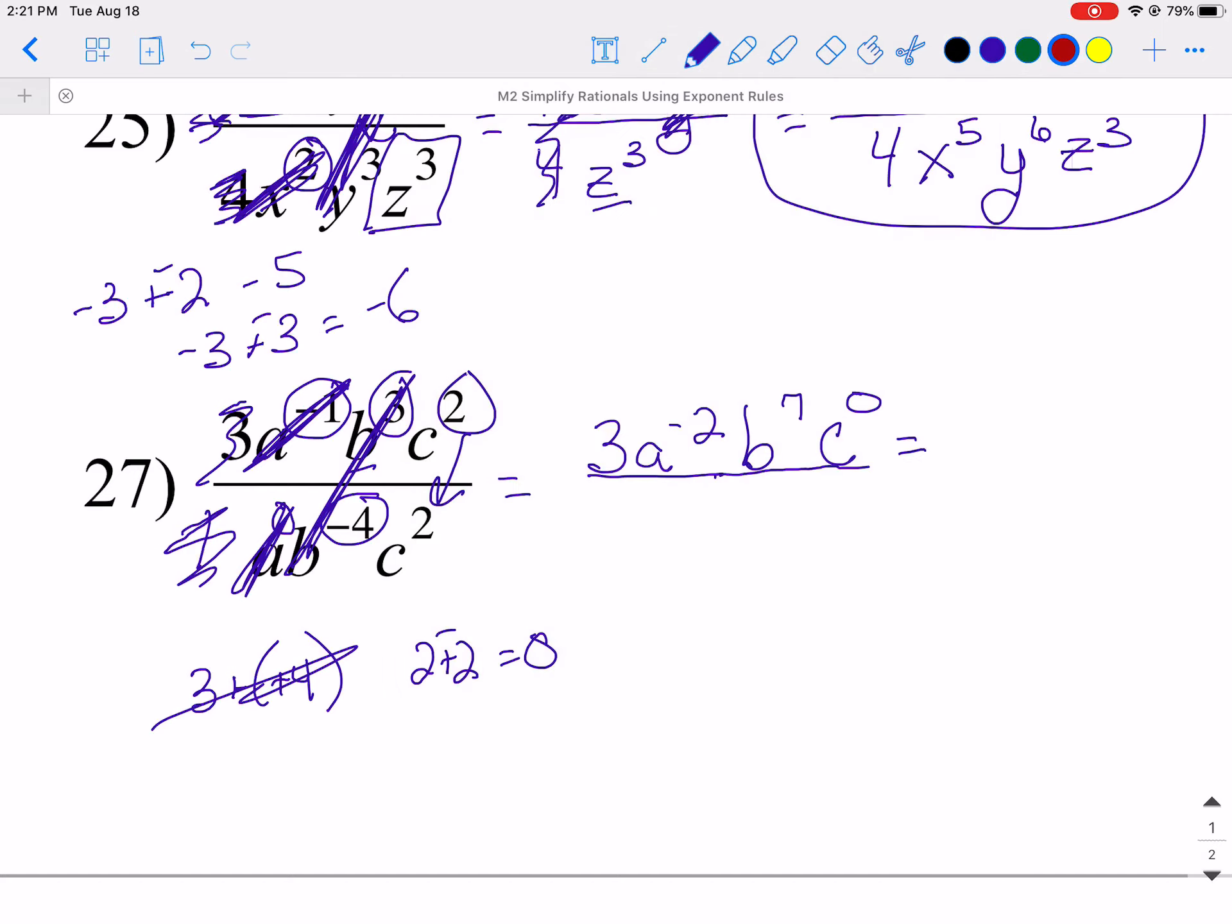All right, so now, 3 stays the same. What does the negative cause it to do? You got it. It goes to the bottom, and you keep your exponent. b⁷ stays up top. And anything raised to the 0 power is 1, so there's your answer. So if you take these piece by piece while I'm showing you, or how I'm showing you, you should be good to go. Again, if you have any questions, let me know.